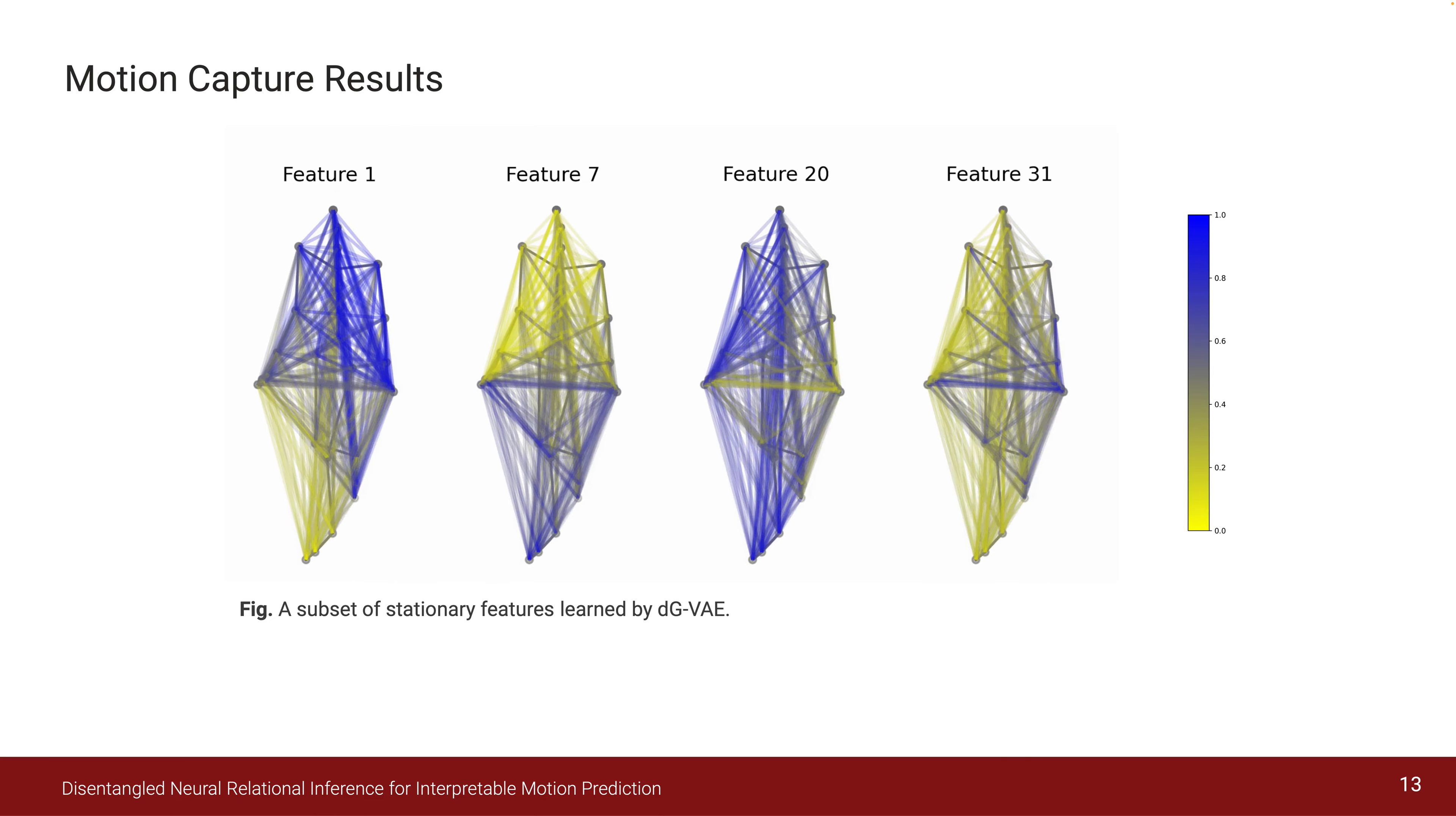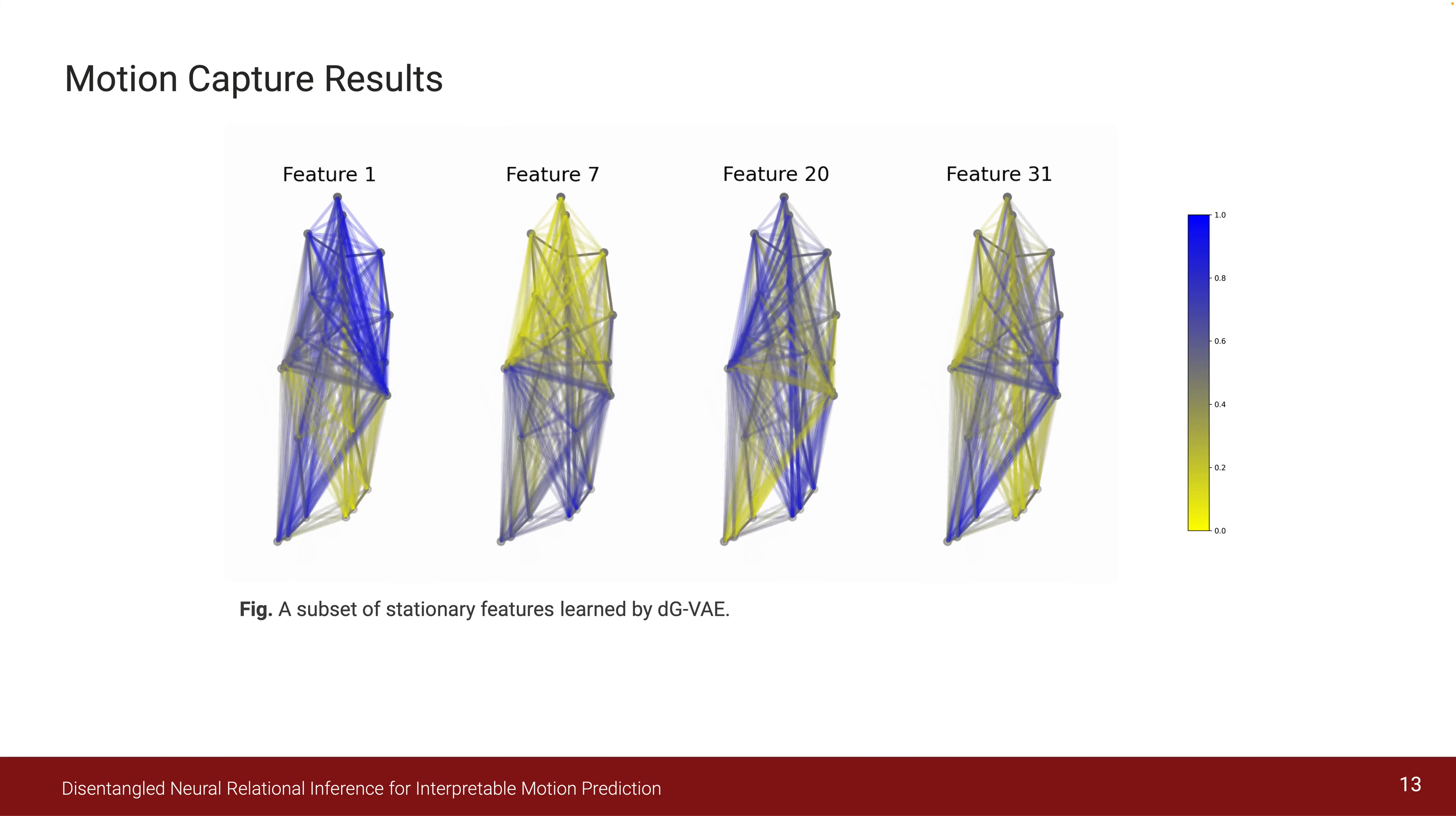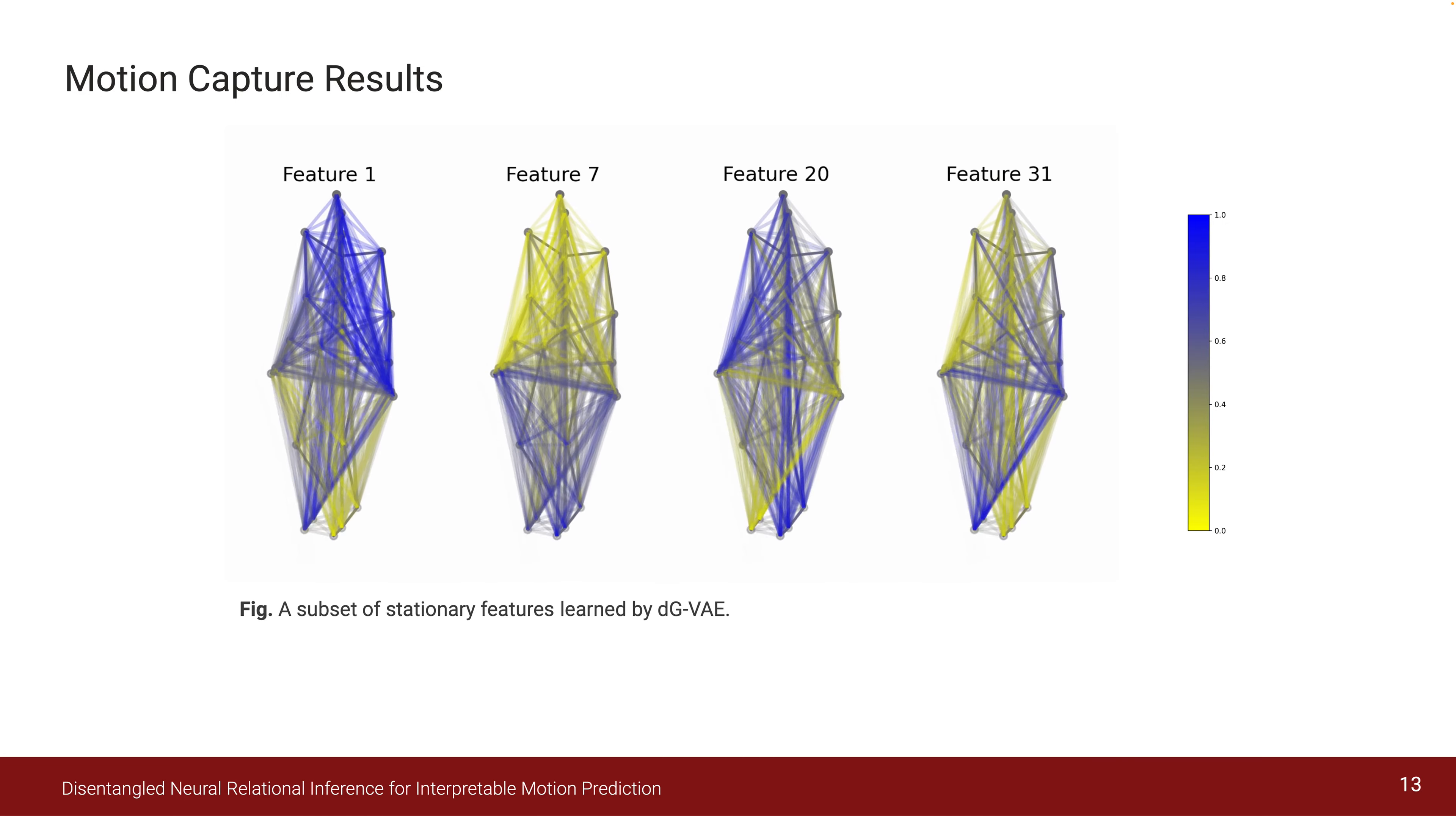Feature 1 showcases the main relation of the upper body to the front leg, which suggests these features might encode weight shifting when a step is taken. Feature 7 strongly relates all extremities like hands and feet, and then weakly links more stationary relations. This encoding therefore suggests variance in distance—while the distance between the shoulders, for example, remains relatively constant, the distance between feet increases and decreases like a pendulum as each step is taken.